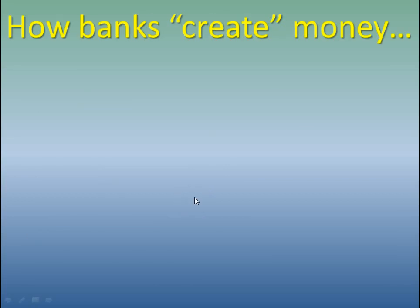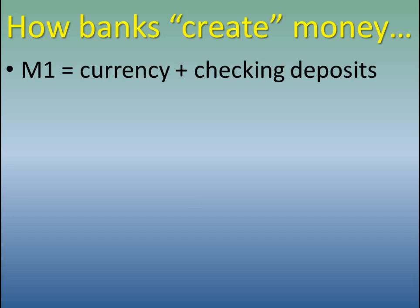When banks make loans, they are creating money — not printing it, but creating more claims on money throughout the system. We know that M1 equals currency plus checking deposits, so anything that increases checking deposits increases M1. The banking system helps generate increasing levels of checking deposits through the loan process.